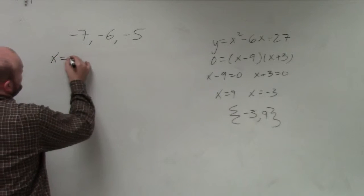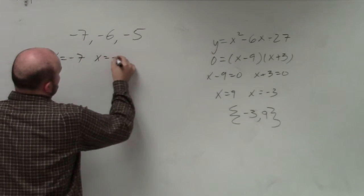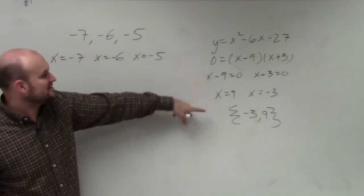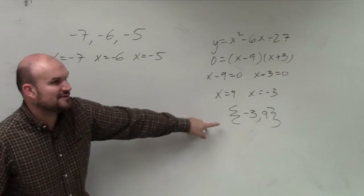So you do x equals negative 7, x equals negative 6, x equals negative 5. Then you go back up. So instead of step 1, step 2, step 3, step 4,